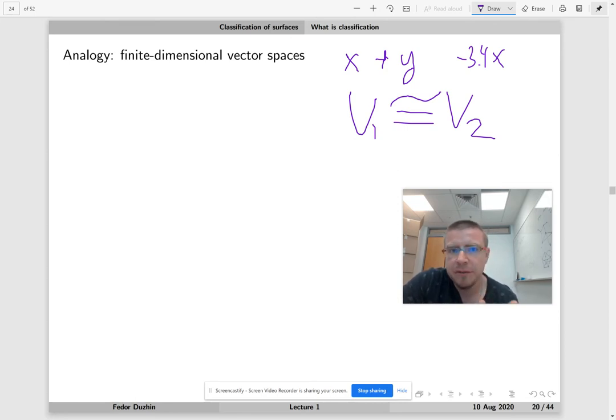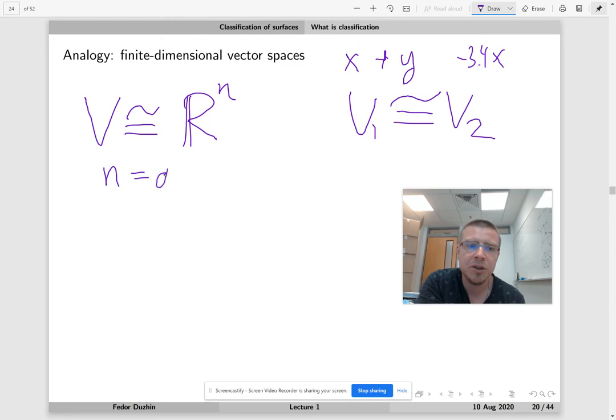And once we have established the rules of the game, so that we are working with vector spaces and we are classifying them up to isomorphism and only finite dimensional vector spaces, we were able to prove a theorem that every vector space V is isomorphic to the space R^n, where n is the dimension of V, right? So this is the classification theorem for vector spaces that you learned in linear algebra 2.